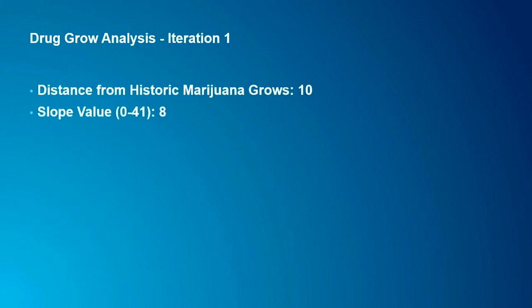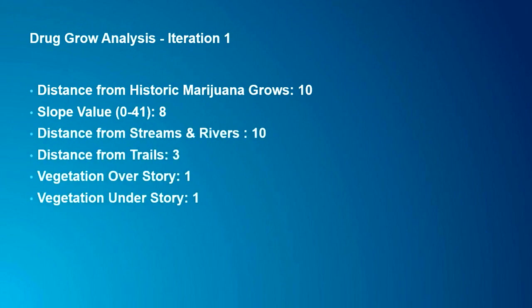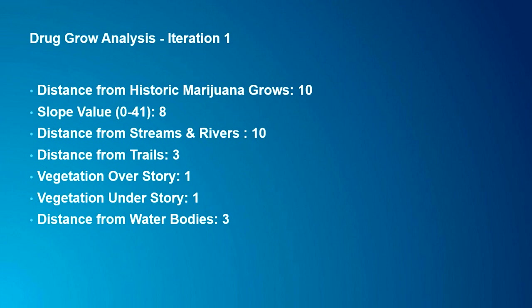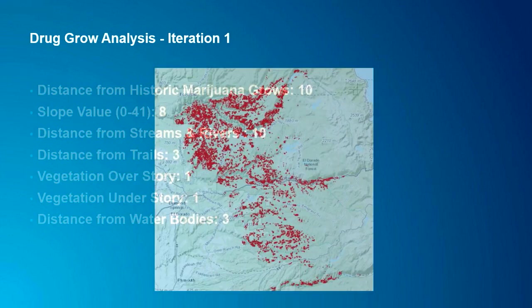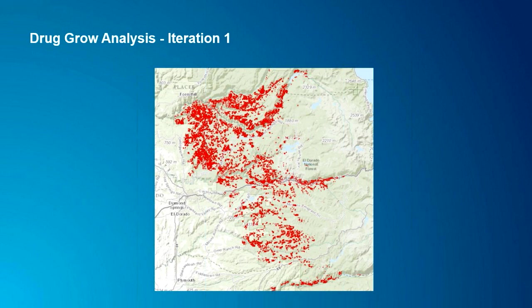When we first began, we used several different spatial features in conjunction with the historic location of these marijuana grows to find other areas suitable for this activity. We came up with different weights for these layers of data to try to produce the most accurate site selection modeling. It was fairly simplistic and didn't give us the results or accuracy we really wanted.